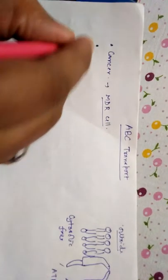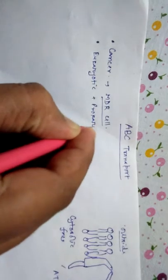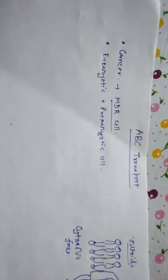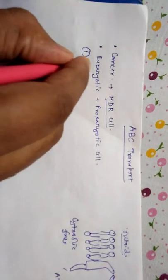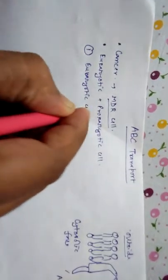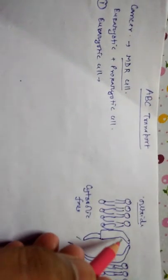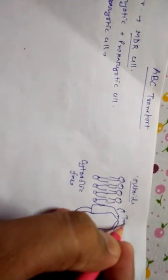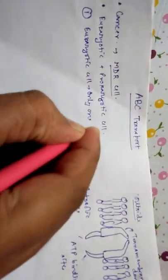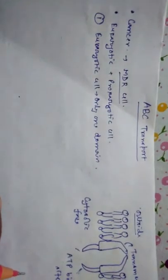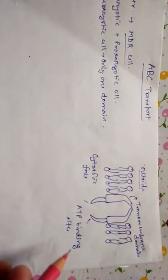Both eukaryotic and prokaryotic cells have ABC Transport, but there is a significant difference. Number one: in the case of eukaryotic cells, only one domain is present — either the transmembrane domain or the ATP binding domain. But in the case of prokaryotic cells, both the transmembrane domain and the ATP binding domain are present.